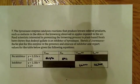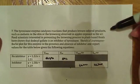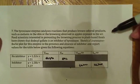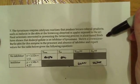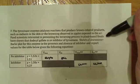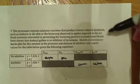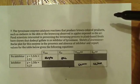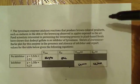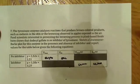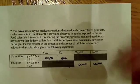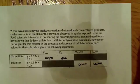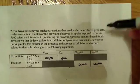Tyrosinase, the tyrosinase enzyme catalyzes reactions that produce brown-colored products, such as melanin in the skin or the browning observed in apples exposed to the air. Food scientists interested in preventing the browning process in plant-based foods have shown that dodecyl gallate, I don't even know what that is, but it's not that important for the problem here, is an inhibitor of tyrosinase. We know it's some kind of an inhibitor. We don't know if it's competitive, uncompetitive, non-competitive, we just know that it's an inhibitor.